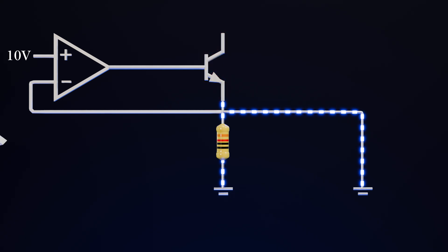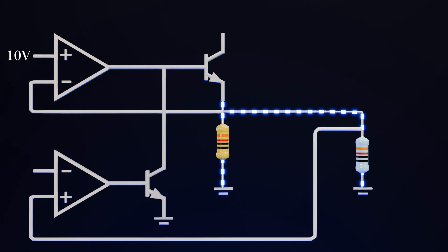We can do that by using another op amp, a transistor, and a shunt resistor. We will connect them this way. Now when 1 amp of current flows through the short, 1 volt will appear across the shunt resistor, because the resistance is 1 ohm. This voltage goes to the positive terminal. Let's apply 1 volt to the negative terminal.